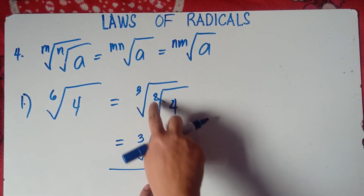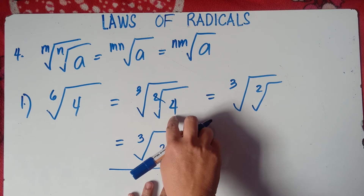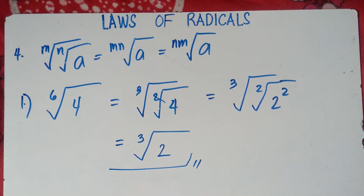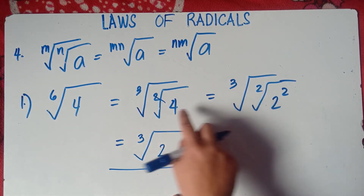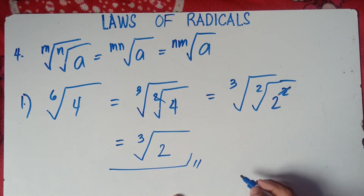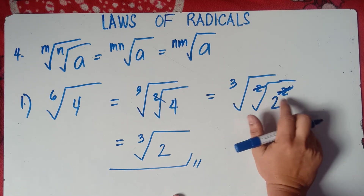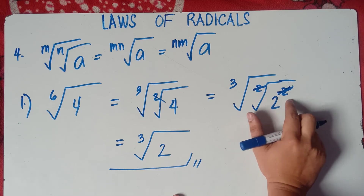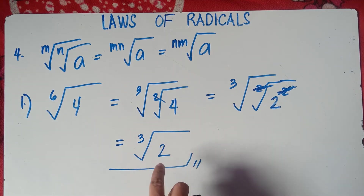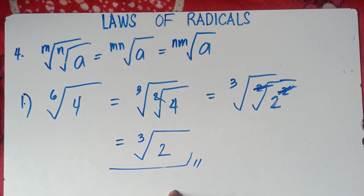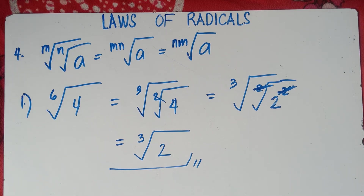Why can we cancel the square root? Because 4 equals 2 squared, and 2 squared means 2 times 2 equals 4. So the index 2 and the exponent 2 cancel by rule number 1 — same index and exponent — and we copy the remaining radical. That gives us the cube root of 2. For the 6th root, we can simplify using cube root and square root.